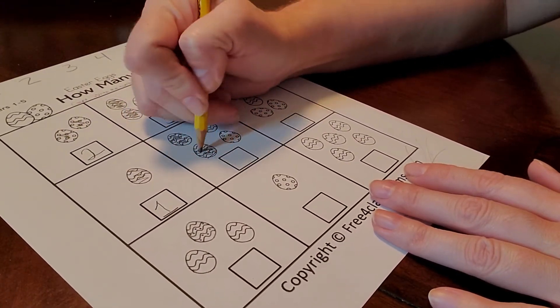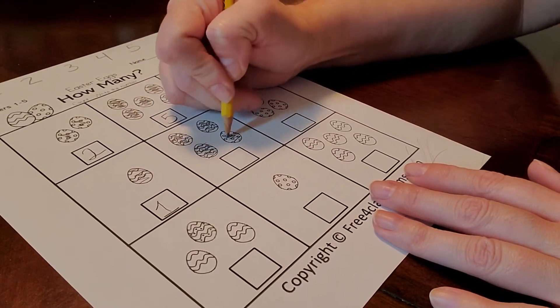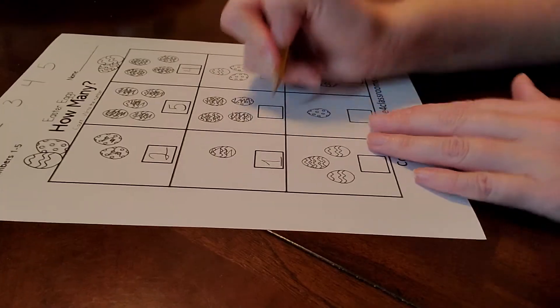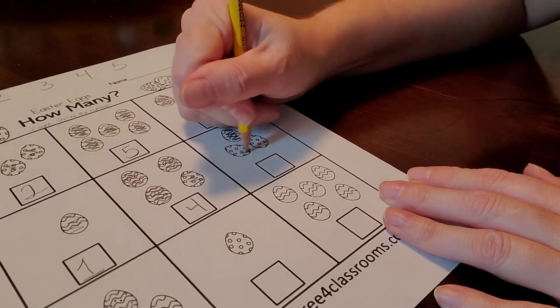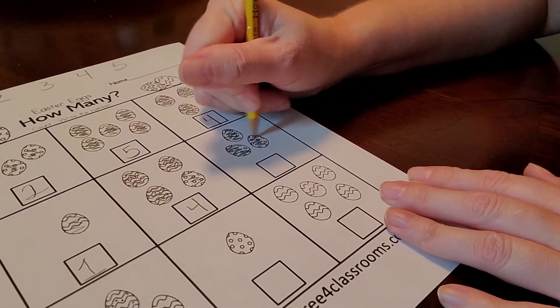And then one, two, three, four. Ah, we have four again. So let's go ahead and write four. One, two, three. One, two, three, right there.